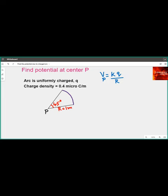A charge Q is uniformly distributed across an arc as shown here. The question is to find the potential at center P. We know that the potential at center P is given by KQ by R.